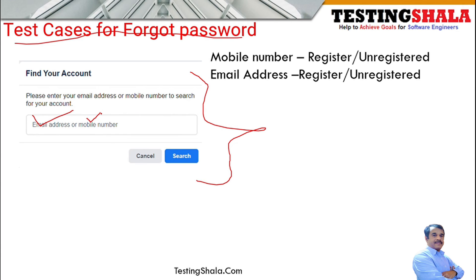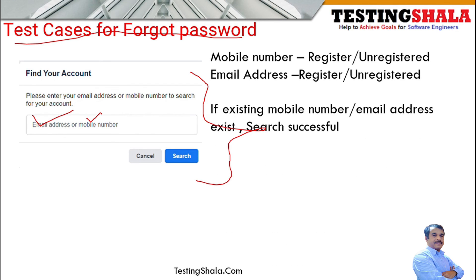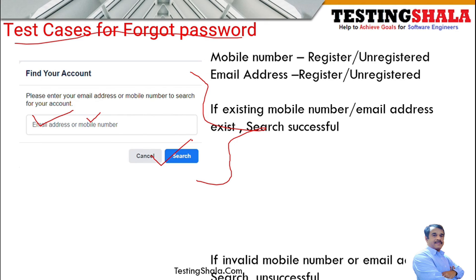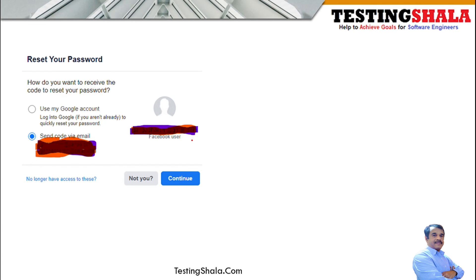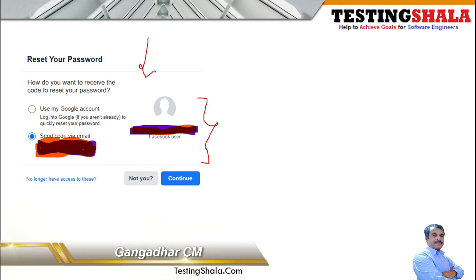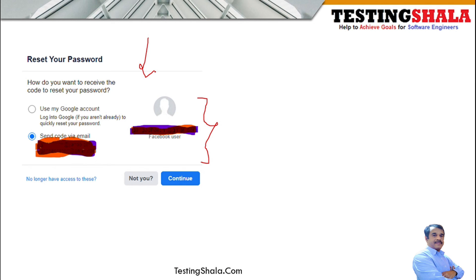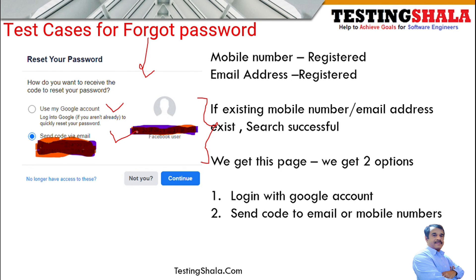Similarly for email address, test with both registered and unregistered email addresses. If the existing mobile number or email address is entered and you click the search button, the search should be successful. Otherwise, you should get an error message saying the mobile number or email address is invalid and Facebook cannot find the account. If the correct email or phone number is entered, you should reach a reset password page where you can reset your password using your Google account or receive a reset code via the registered email.